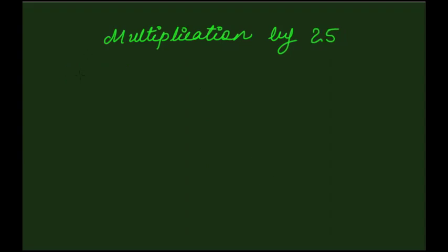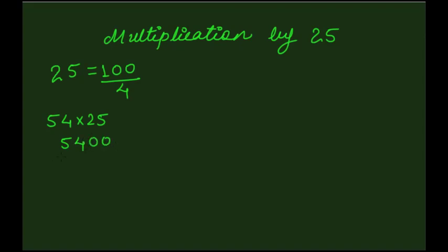Let's also understand another trick for multiplying any number by 25. Remember, 25 is equal to 100 divided by 4. However, while multiplying any number, say 54 by 25, just add 2 zeros to the right of the number 54. So it becomes 5400, and then half it twice. That is 5400 divided by 2, divided by 2 again. Therefore, 5400 divided by 4 equals 1350.